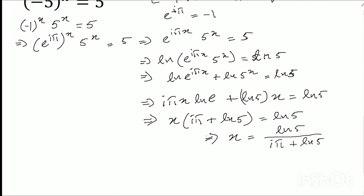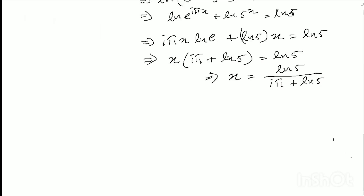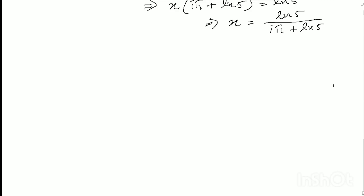Alternative method — method number 2. I will show another answer using minus 1 equals to i squared. So let's start to solve this problem using this equation. I squared into 5 to the power x equals to 5, because i squared equals to minus 1.